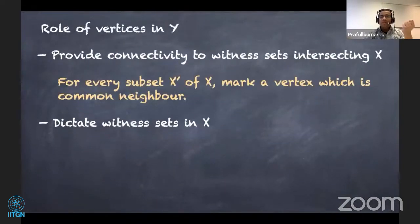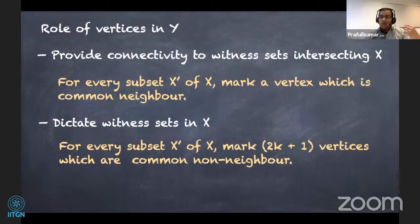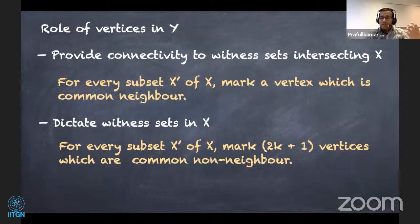Now that we've identified the roles of vertices in Y, can we do some marking and store a limited number of vertices instead of storing the entire Y? The first marking: for every subset X' of X, mark a vertex which is its common neighbor. The second part: for every subset X' of X, mark at least 2k + 1 vertices which are non-common neighbors. Marking 2k + 1 vertices ensures that after contracting at most k edges, at least one vertex remains unaffected and still dictates witness sets in X.